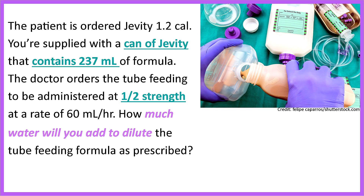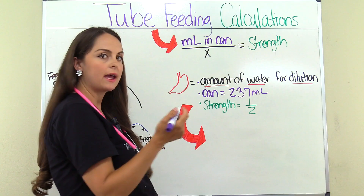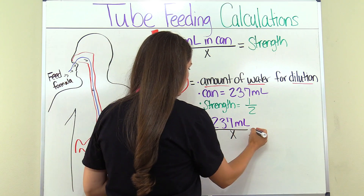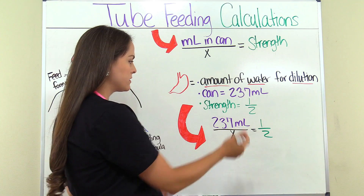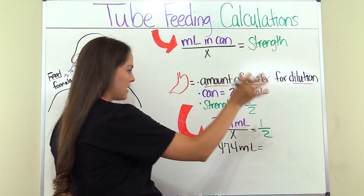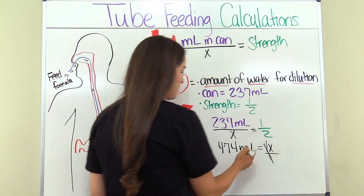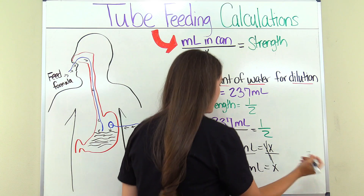We need to know how much the can contains — 237 milliliters — and what the ordered strength is — half strength. So we set up our formula: the can contains 237 milliliters over X, and the strength is one-half. We multiply across: 237 times 2 is 474, giving us 474 milliliters, and X times 1 is 1X. We divide both sides by 1, and we get 474 milliliters equals X — this is the total volume.